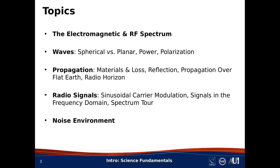Next, we'll talk about how radio signals are used to send information. Almost always, this is by a method known as sinusoidal carrier modulation. This modulation determines bandwidth, and bandwidth is the primary concern in the management of spectrum. So we'll talk about signals in the frequency domain, and I'll show you a few examples of signals as they appear in the frequency domain, including a few examples recorded right off the air.